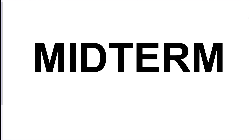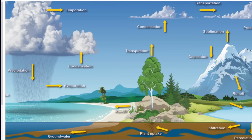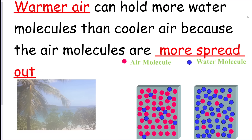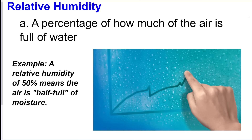Now we move on to the weather unit. The first thing in weather you have to know is the water cycle — be familiar with every term in the picture. One that people forget is transpiration, which comes from plants. Warmer air can hold more water than cold air because the molecules are more spread out.